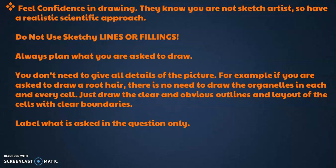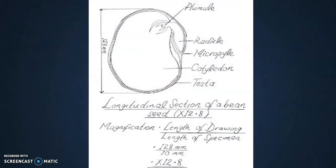You are just told to draw the outline, so you have to draw the boundaries where cells can be counted and they should be shown separate from each other. Just draw the clear and obvious outlines and layout of the cells with clear boundaries. They should be showing like they are having cell walls, but not all the details. If you are going to draw the large central vacuole or the nucleus, no need to give the details of the inside. Label what is asked in the question only. No need to draw irrelevant labeling because sometimes it's wrong and puts a bad impression on the examiner as well.